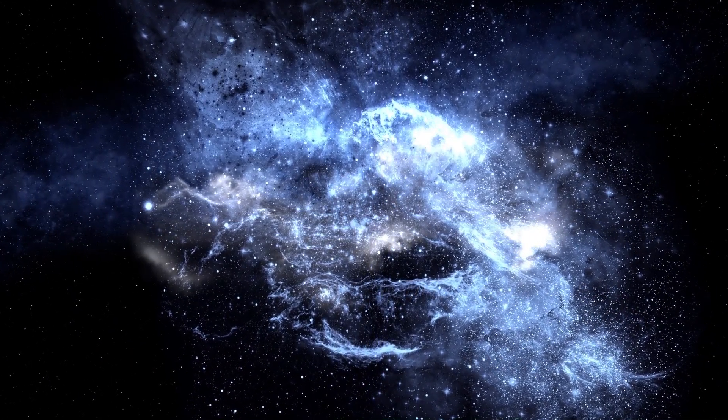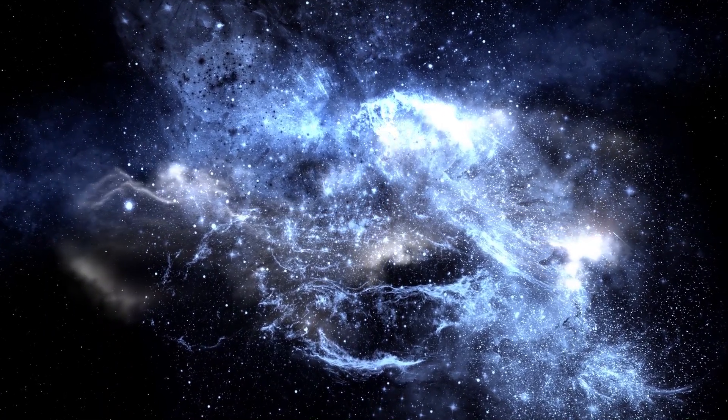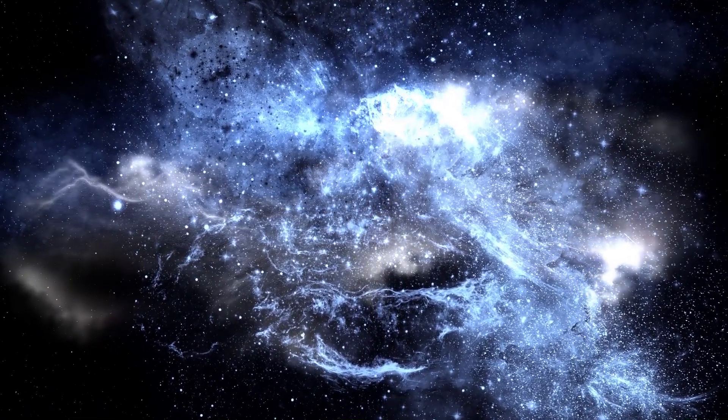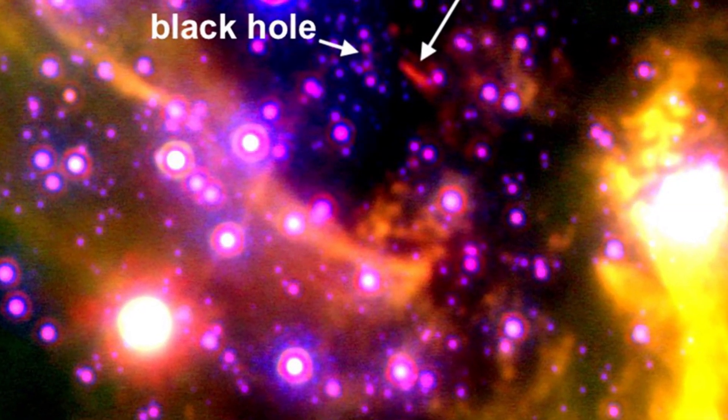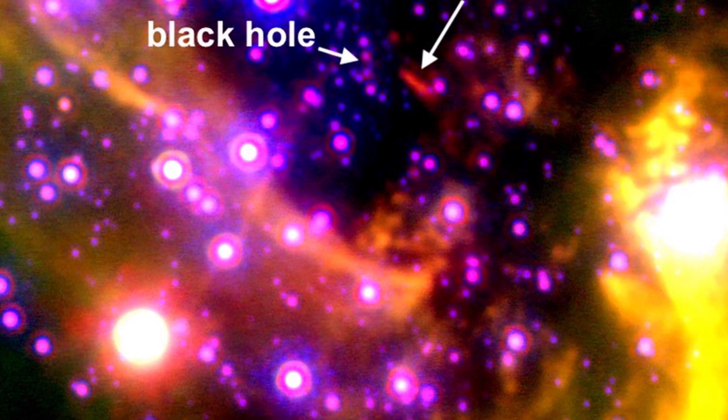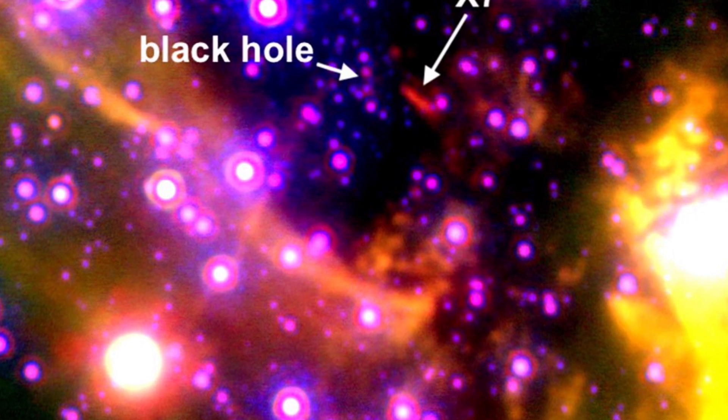For a while, scientists wondered about the origin of X7, since a cloud of such magnitude turned out to be a very rare object. The most likely theory suggests that X7 may be the remnant of an ancient stellar collision and now is on course for the Milky Way's central black hole.